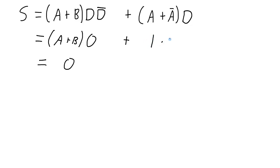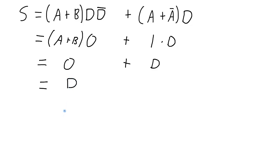So here we get 1 AND d. Any variable ANDed with 1 will just be that variable. So we have now 0 ORed with d. Any time you OR a variable with 0, it will simply be the variable. So in this case, s equals d.